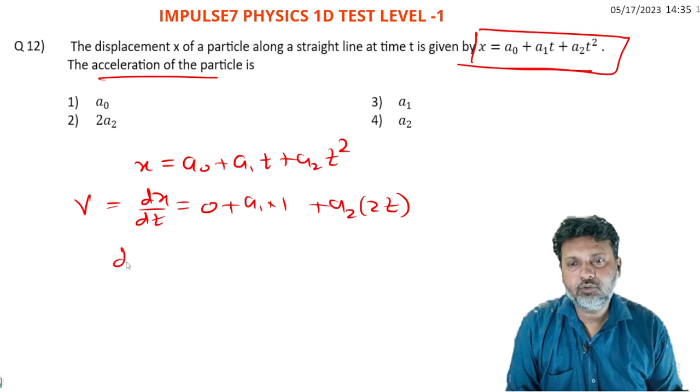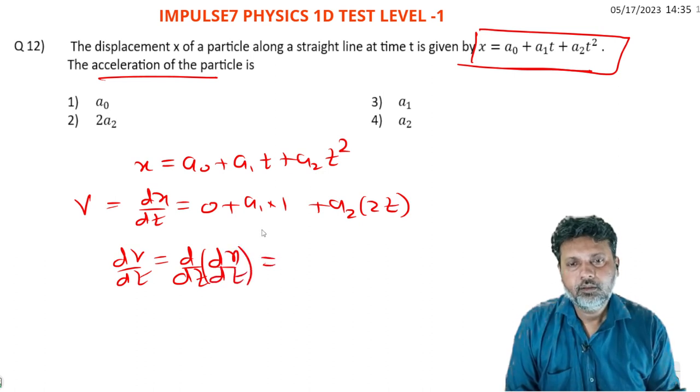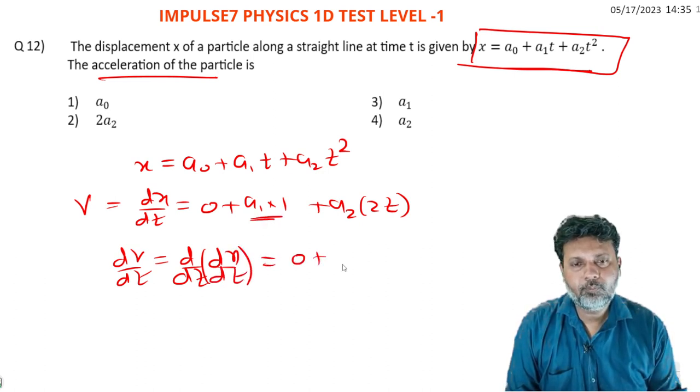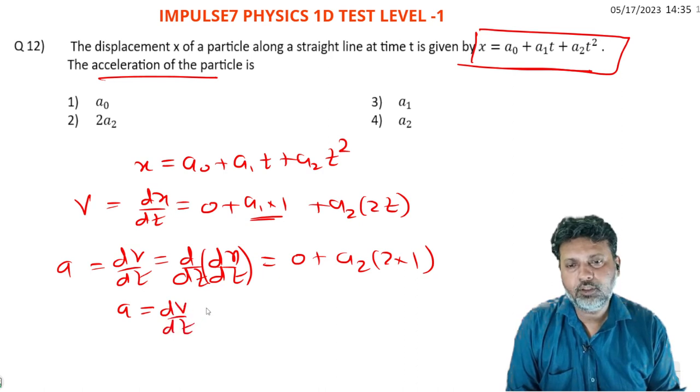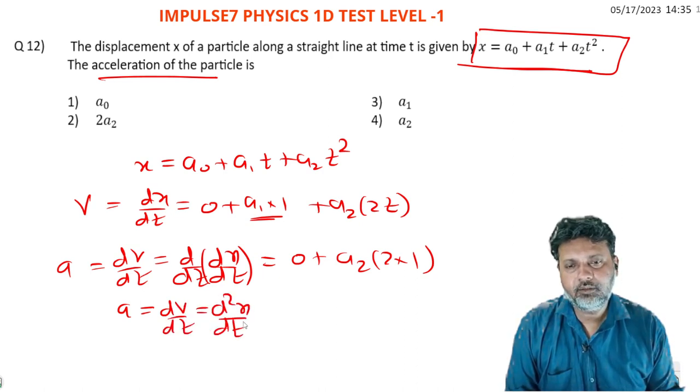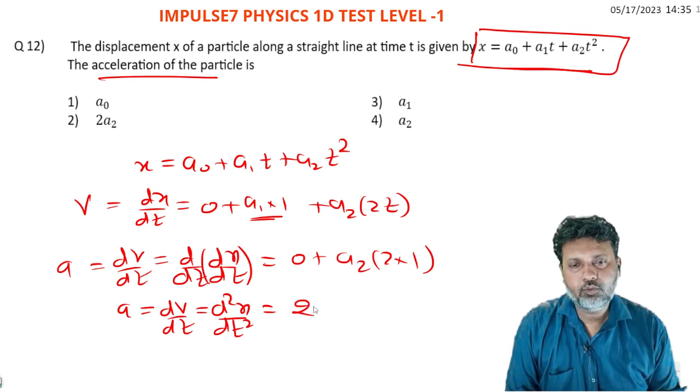Differentiate again with respect to time. Yes, dx/dt. Zero plus a2 times two times one. Finally, acceleration equals d²x/dt², which equals 2*a2. The acceleration is 2*a2.